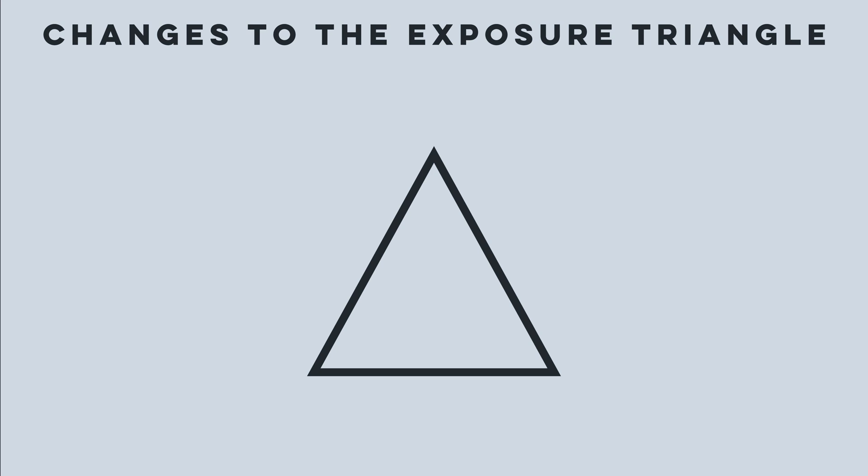The first major change I'm going to make is renaming it to the camera settings triangle. This allows me to weave in the concepts of brightness and exposure into the triangle instead of trying to edit a triangle that's flawed from the beginning. It just makes sense to call it the camera settings triangle, since that's ultimately the aim — to more easily make sense of our camera settings and how we should use them.